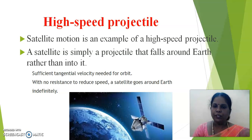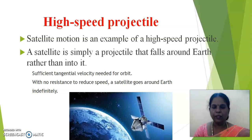To answer this: satellite motion is an example of a high-speed projectile. A satellite is simply a projectile that falls around the earth rather than into it, only when it has sufficient tangential velocity needed for orbit. With low air resistance to reduce the speed, a satellite goes around the earth indefinitely.